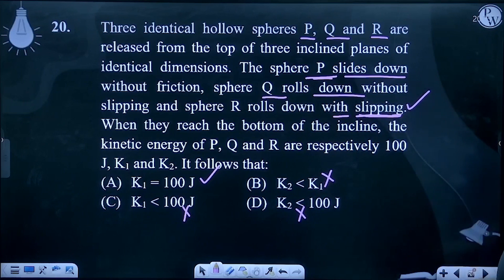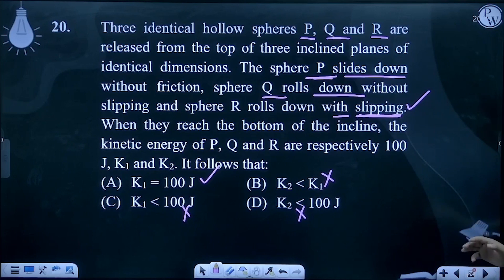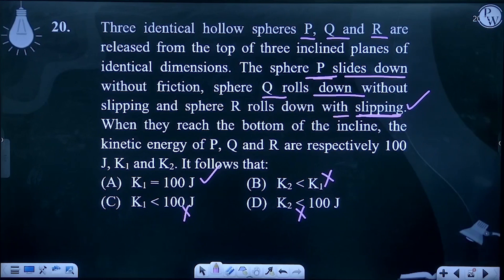सबसे accurately हम option A ही बोल सकते हैं। बाकी options equal नहीं होंगे, लेकिन K2 कम या ज़्यादा होगा — यह depend करता है कि slipping forward है या backward है, उससे decide होगा कि answer कौन सा है।